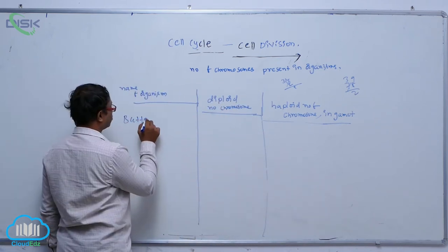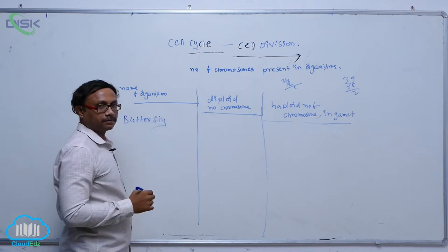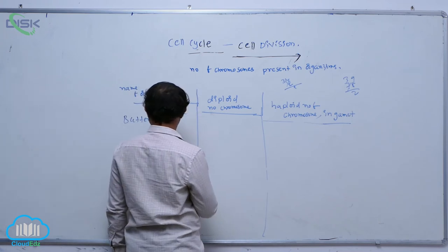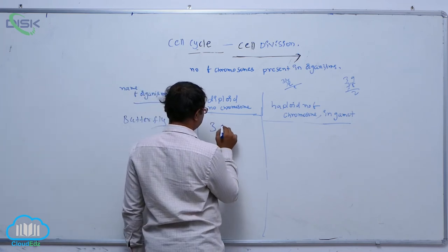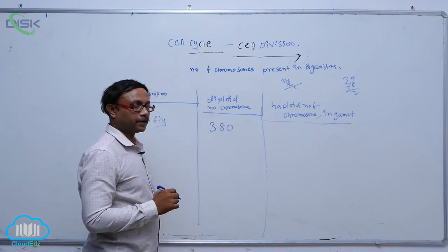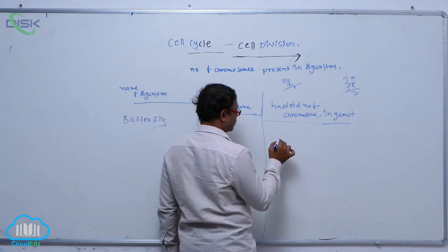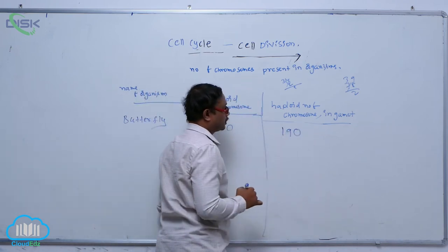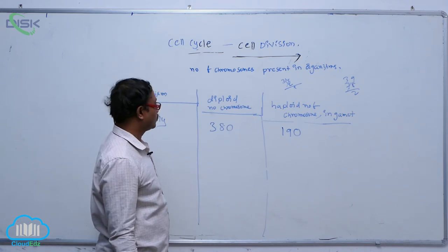In the butterfly, the diploid number of chromosomes is 380, meaning it has 380 chromosomes. The haploid number of chromosomes in the gamete is 190.